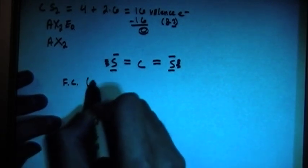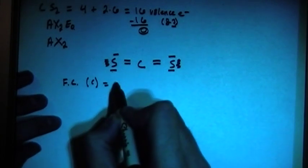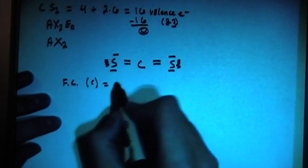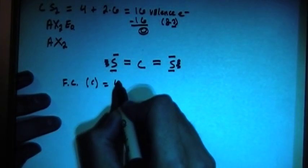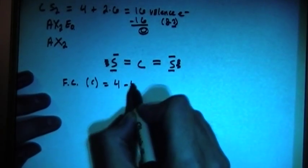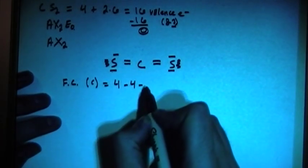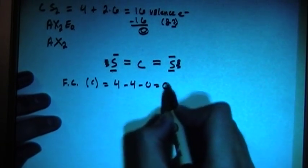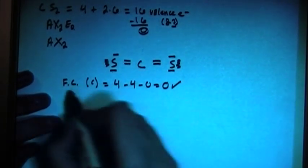Formal charge of the carbon, remember formal charge is the number of valence electrons brought in, so that's 4, minus the number of bonds, which is 4, minus the number of lone electron pairs, and there's 0. So that means the formal charge on the carbon is 0, so that's what we want, it's good.